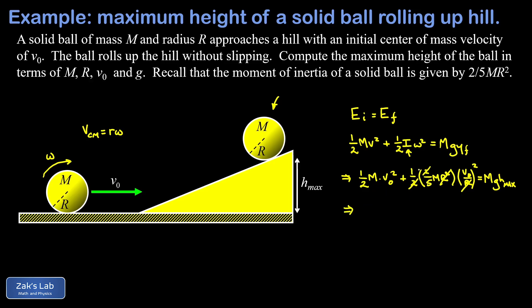and then I have a term with one fifth M v naught squared. So doing a little factoring there, that's a one half plus one fifth times M v naught squared. So the M's cancel out.